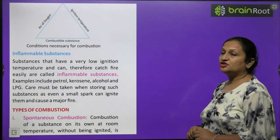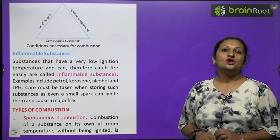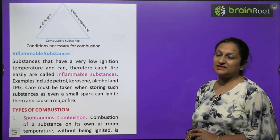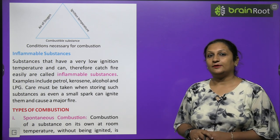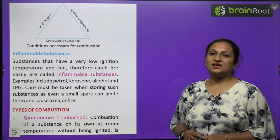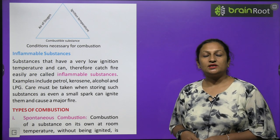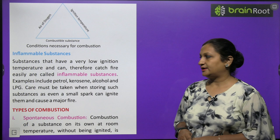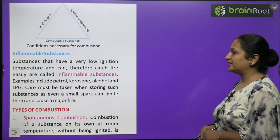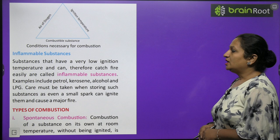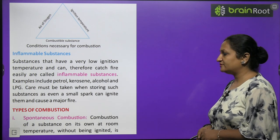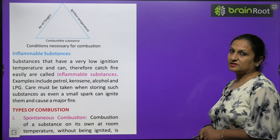Inflammable substances are those whose ignition temperature is very low and which easily catch fire — like petrol and kerosene. We have to be very cautious with these, because even a small spark can cause a major fire. Substances that have low ignition temperature and can catch fire easily are called inflammable substances — examples include petrol, kerosene, alcohol, and LPG.